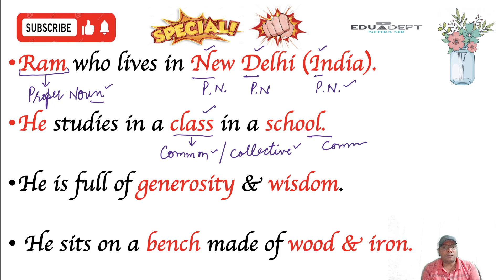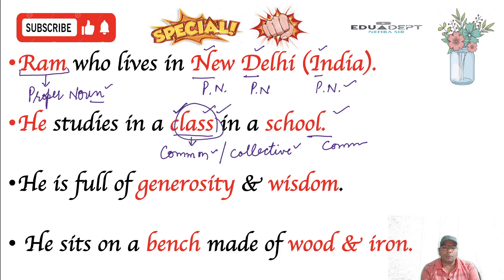Common noun yaani jab hum kisi ek group mein se ek vishesh vyakti ya vastu ke baare mein baat karte hain, usko common noun bolte hain. Aur jab hum us poore group ko koi naam de dete hain, to usko hum collective noun bolte hain. To class jo hai, apna collective noun bhi hoga aur common noun bhi hoga. School apna collective noun bhi hoga aur common noun bhi hoga. Machliyong ke jhund ko bhi hum school bolte hain. Usi tarike se school ke andar bachche bhi hote hain.